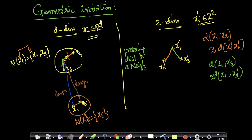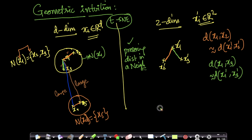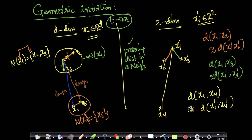But what happens to x4 and x5? I am only trying to preserve the neighborhood of x1. For points which are not in the neighborhood, I can place them anywhere — I do not promise to preserve those distances. For example, x4: I will not say that d(x1, x4) is the same as d(x1-dash, x4-dash). These need not be the same or even close.